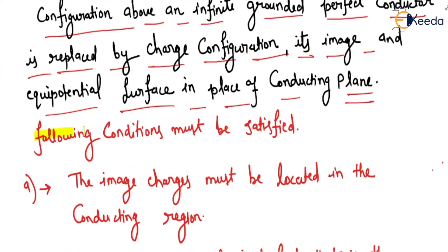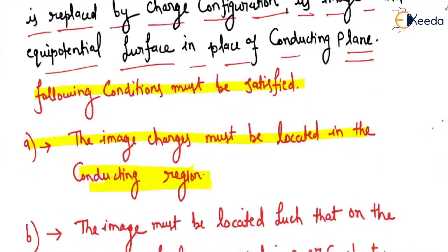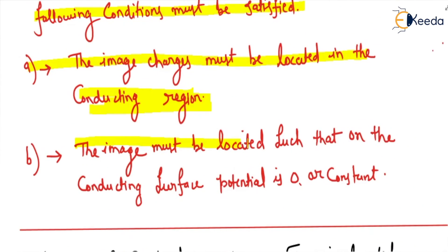The image charge must be located in the conducting region, it means below the conducting region. And the image charge must be located such that on the conducting surface potential is zero or constant.